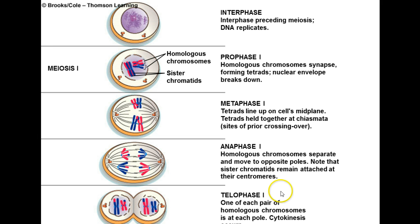Let's look at the diagram. We're going to start with interphase, and interphase is just like interphase prior to mitosis. We have an intact nucleus, DNA is uncoiled as chromatin, there's a nuclear envelope in place, and it's very likely to have one or several nucleoli within the nucleus.